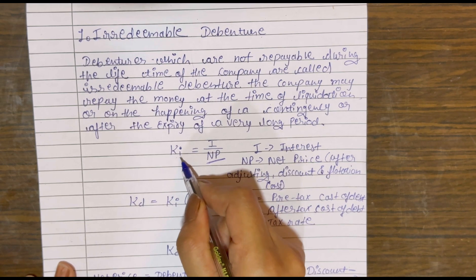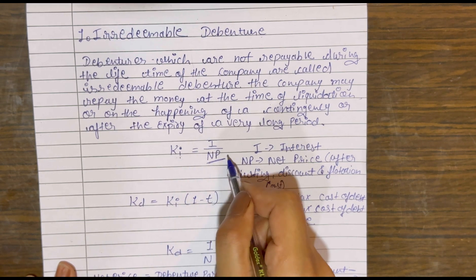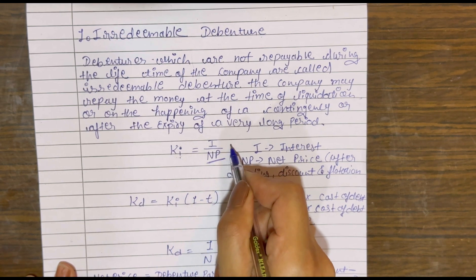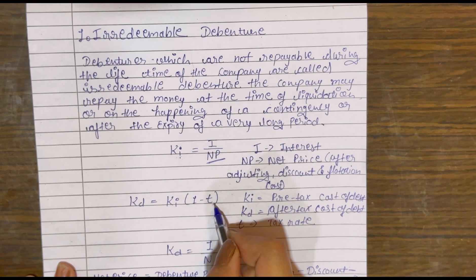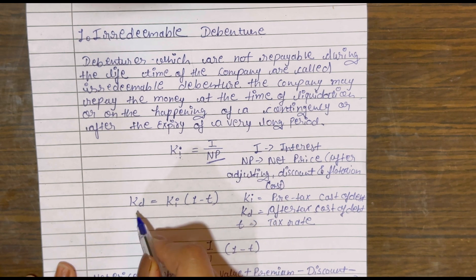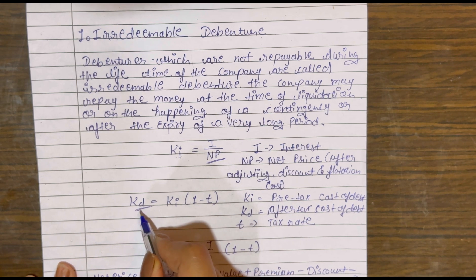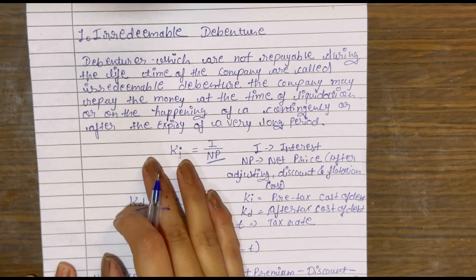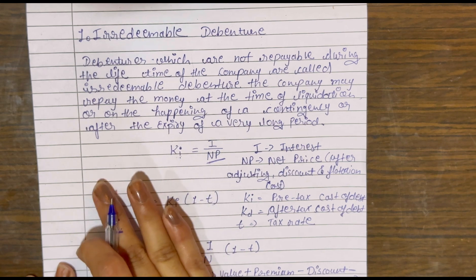अगर tax नहीं है तो यही kd हो जाता है — मतलब cost of debt। अगर tax rate है तो ki का formula होता है: Interest × (1−t) ÷ NP। Net price वो price है जो debentures के par value में से discounts, premiums और flotation cost calculate करने के बाद आती है।